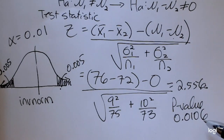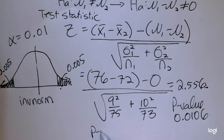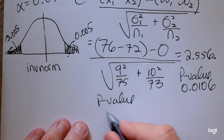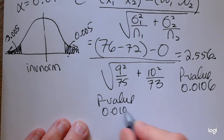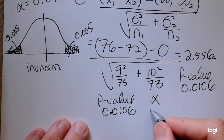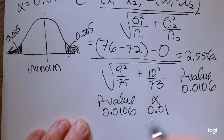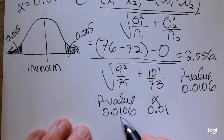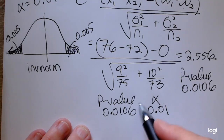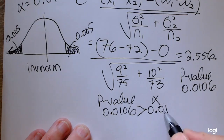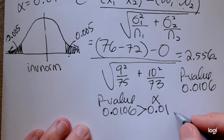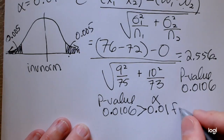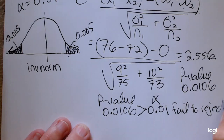Looking at this p-value: the p-value is the area that goes with the standardized test statistic. Comparing using the p-value method — .0106 compared to our level of significance of .01 — this p-value is slightly greater than the level of significance. So the decision based on the p-value method is to fail to reject the null.